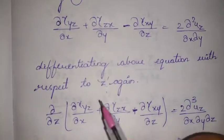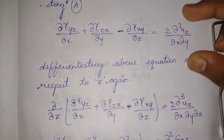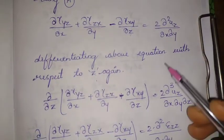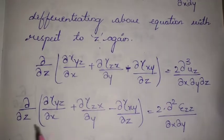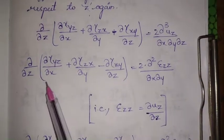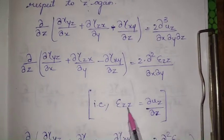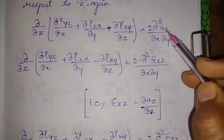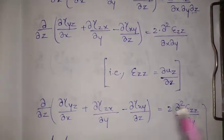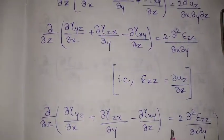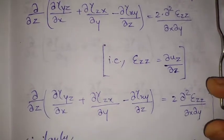Differentiating again with respect to z, we get dou³ uz / (dou x · dou y · dou z) in the denominator. Taking dou uz / dou z common — which equals epsilon zz — we simplify to get: dou/dou z (dou gamma yz / dou x + dou gamma zx / dou y − dou gamma xy / dou z) = 2 · dou² epsilon zz / (dou x · dou y). This is the first compatibility condition in the second group.